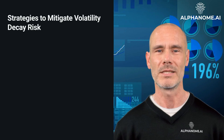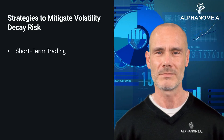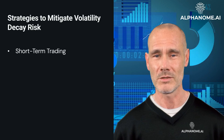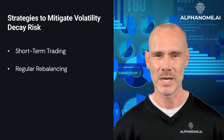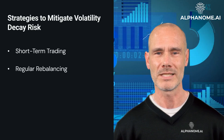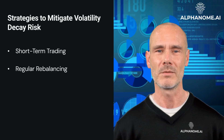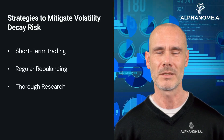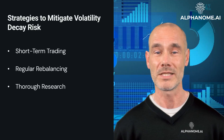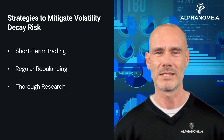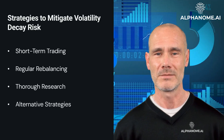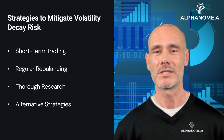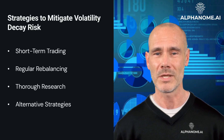Strategies to mitigate volatility decay risk: 1. Short-term trading — use leveraged ETFs for short-term trading or hedging rather than as long-term investments. 2. Regular rebalancing — if holding leveraged ETFs for longer periods, consider regularly rebalancing your portfolio to manage exposure. 3. Thorough research — understand the specific mechanics and costs associated with any leveraged ETF before investing. 4. Alternative strategies — for long-term leveraged exposure, consider alternative strategies such as options or margin trading, which may offer more predictable outcomes.